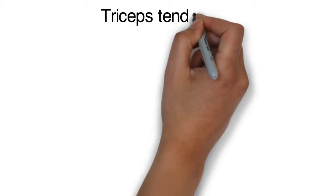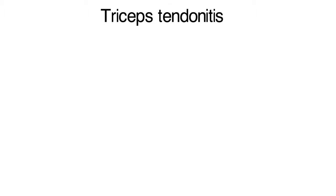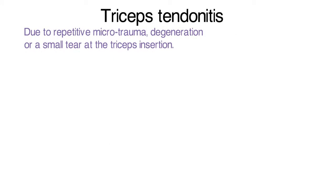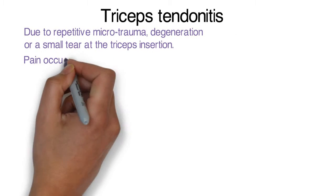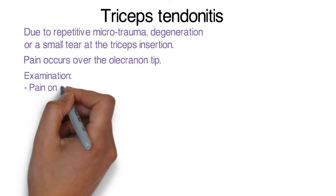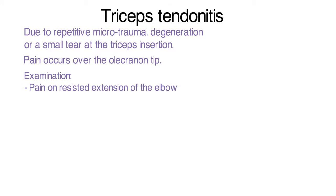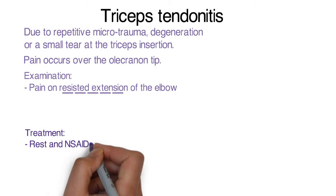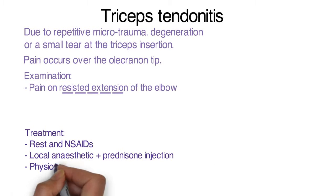Triceps tendonitis also occurs due to repetitive microtrauma, degeneration or a small tear at the insertion. Pain occurs over the olecranon tip, which is worse on resisted extension of the elbow. Treatment options are the same as above.